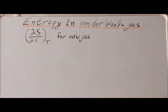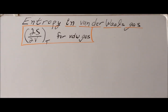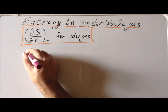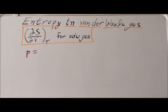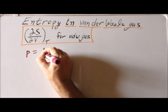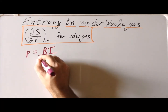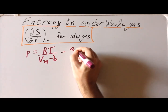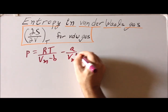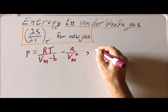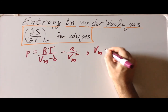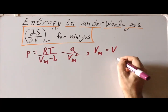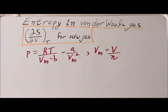And we are going to make a point of comparing that with the ideal or perfect gas. Recall that the equation of state for the van der Waals gas is: pressure equals RT divided by (V_M minus b) minus a divided by V_M squared, where V_M is the molar volume — that is, the volume of the system divided by the number of moles of gas.